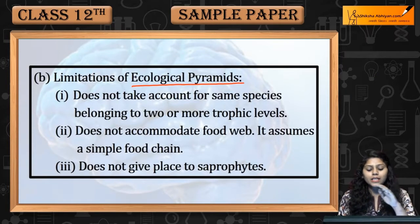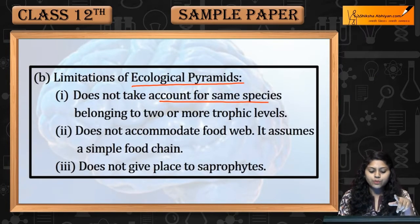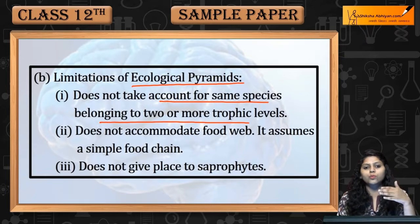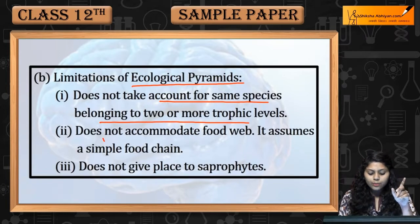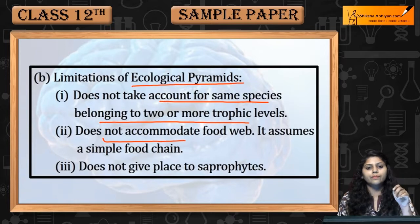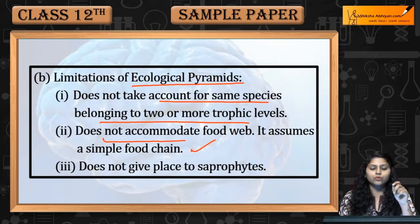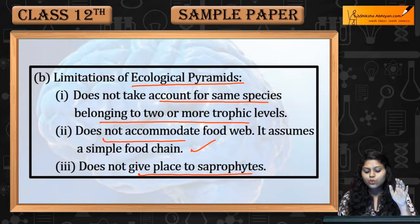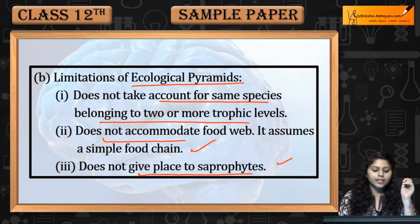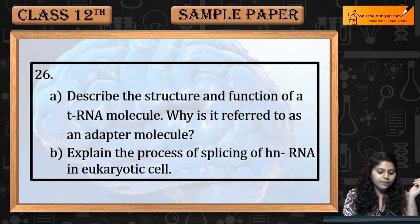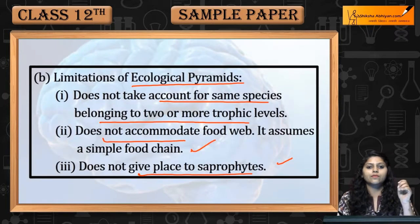Limitations of ecological pyramids: Does not take account for same species belonging to two or more trophic levels. Does not accommodate food web — assume karta hai simple food chain. Does not give place to saprotrophs. This was question number 25.